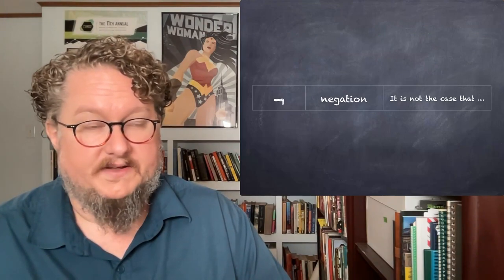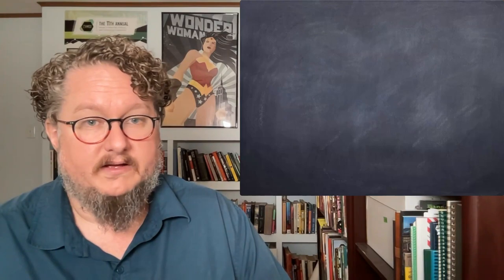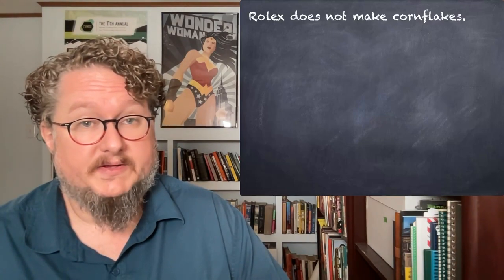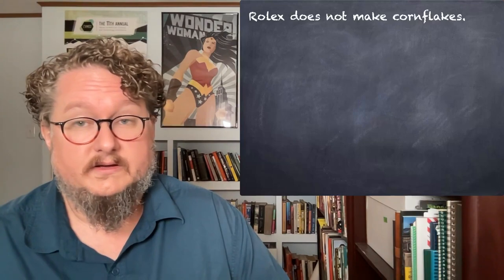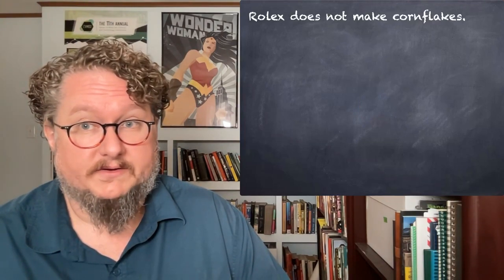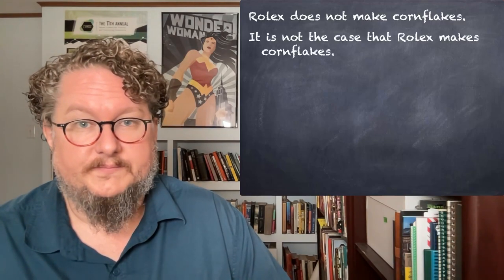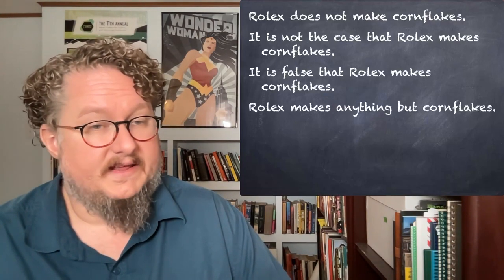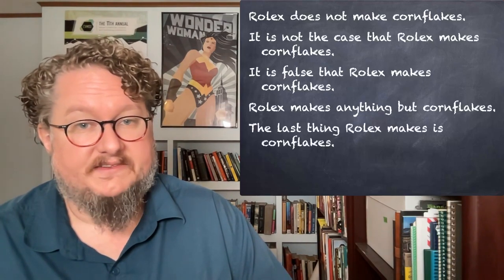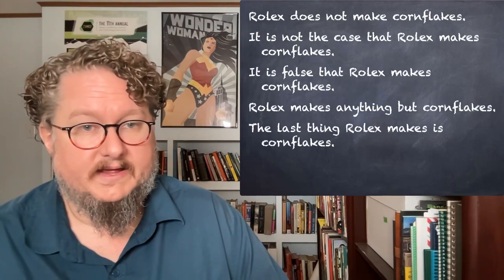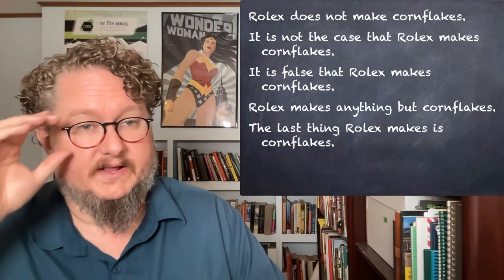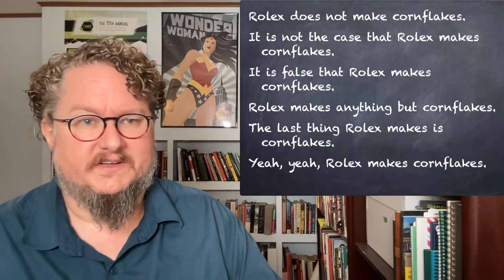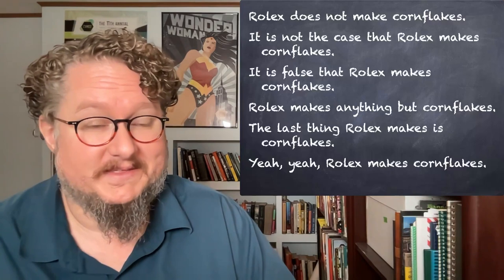Let's start with negation — 'it is not the case that' — represented with the hook symbol. Examples of sentences we translate using negation: 'Rolex does not make corn flakes' — if the atomic sentence is 'Rolex makes corn flakes,' the negation captures its denial. Other examples include 'It is not the case that Rolex makes corn flakes,' 'It is false that Rolex makes corn flakes,' 'Rolex makes anything but corn flakes,' and 'The last thing Rolex makes is corn flakes.' Even sarcasm like 'Rolex makes corn flakes. Sure they do.' might best be captured with a negation.